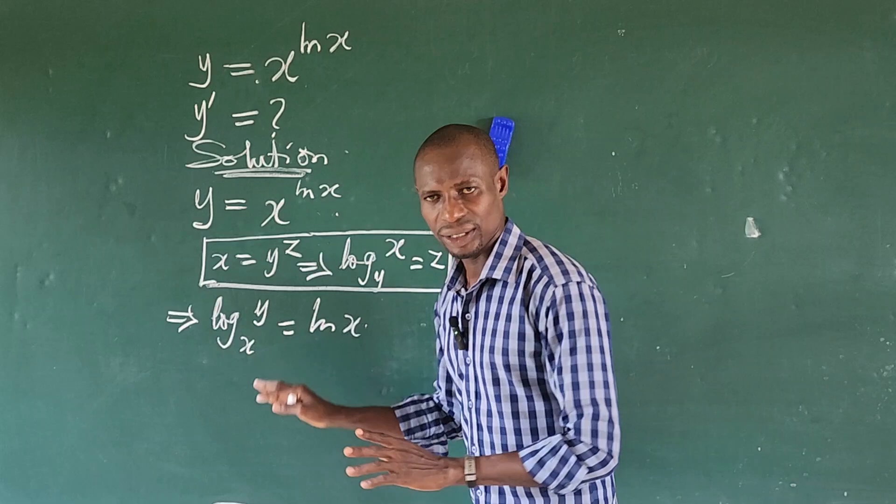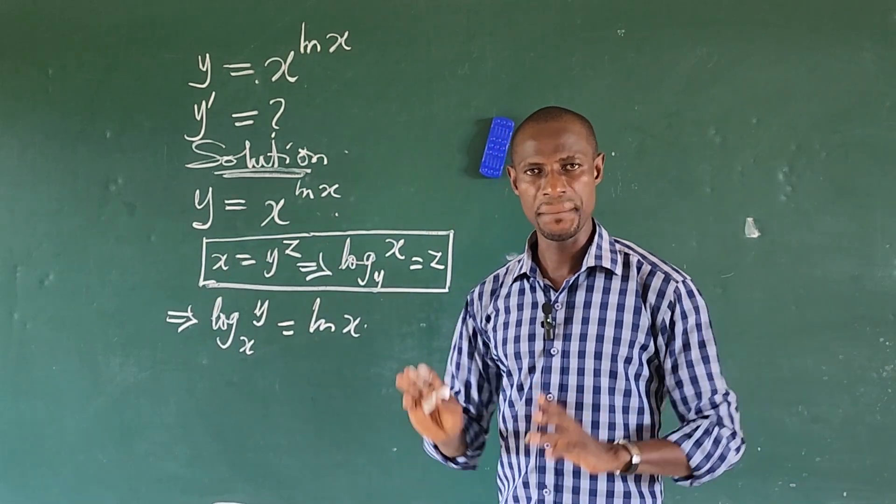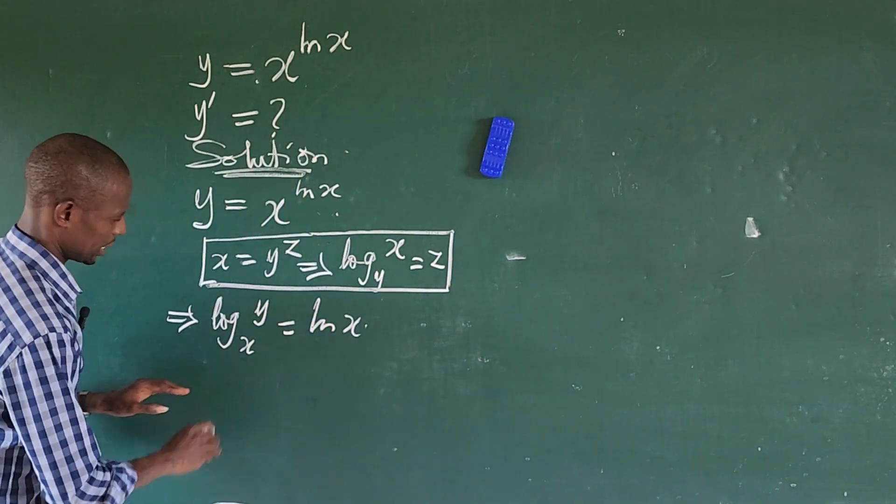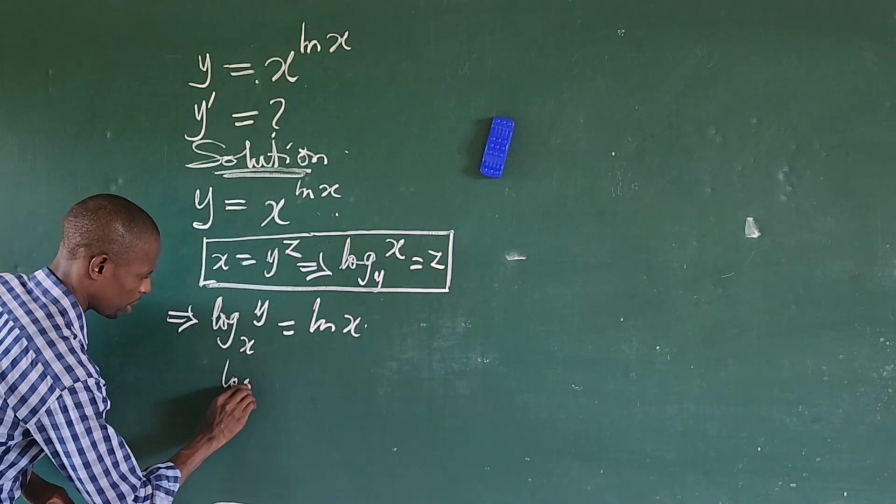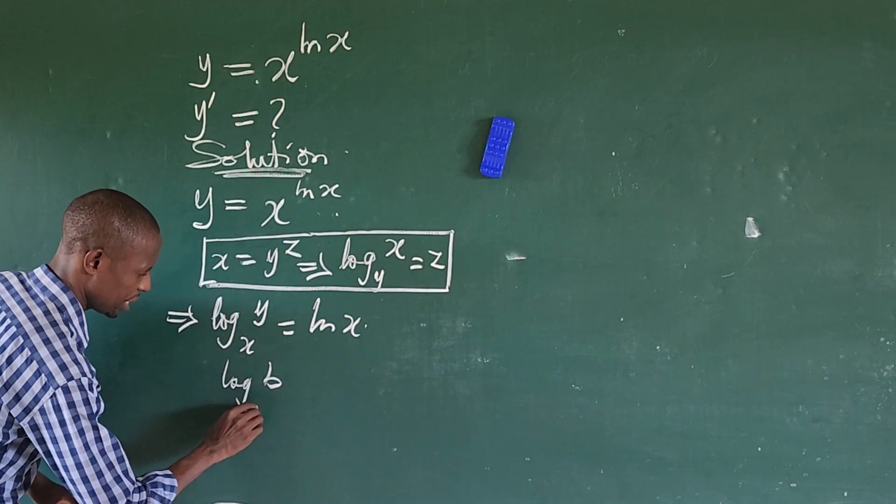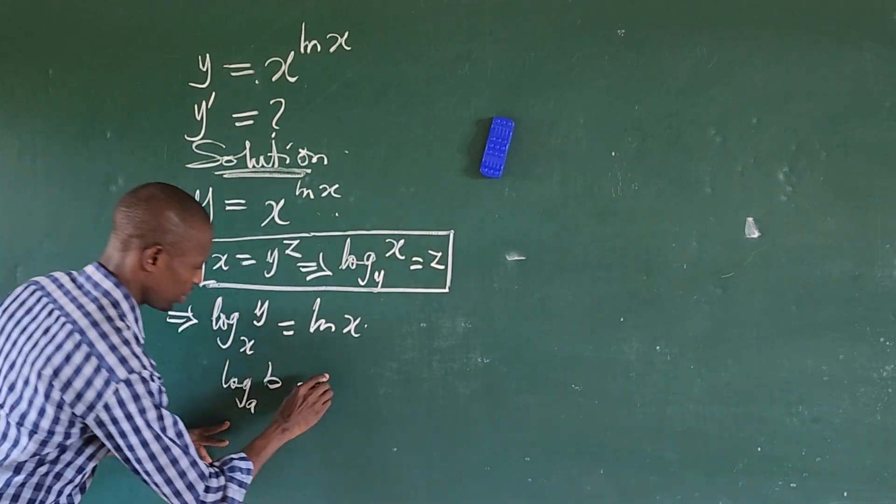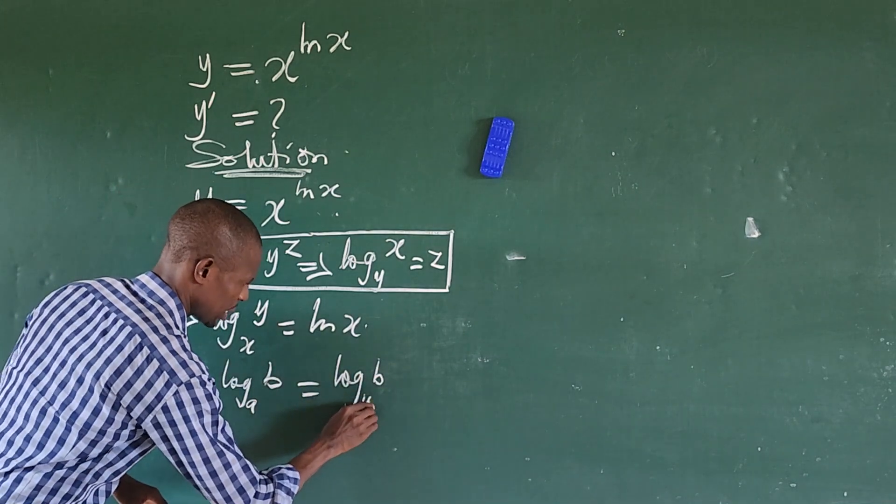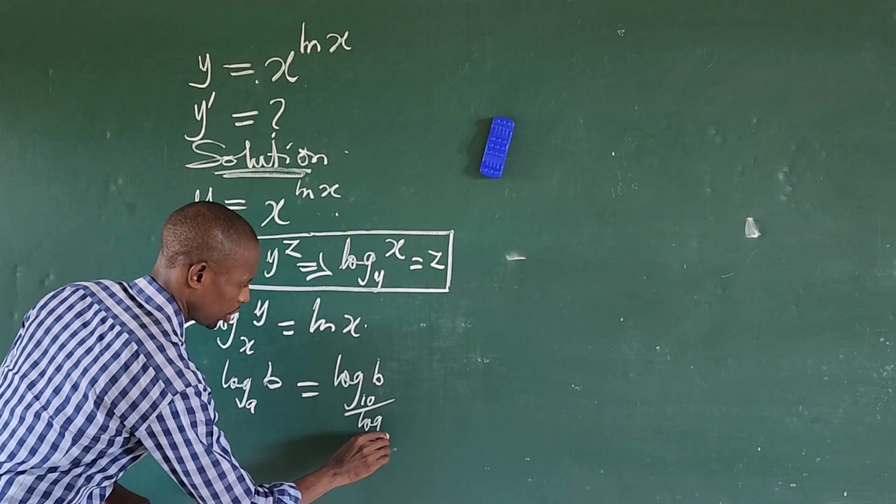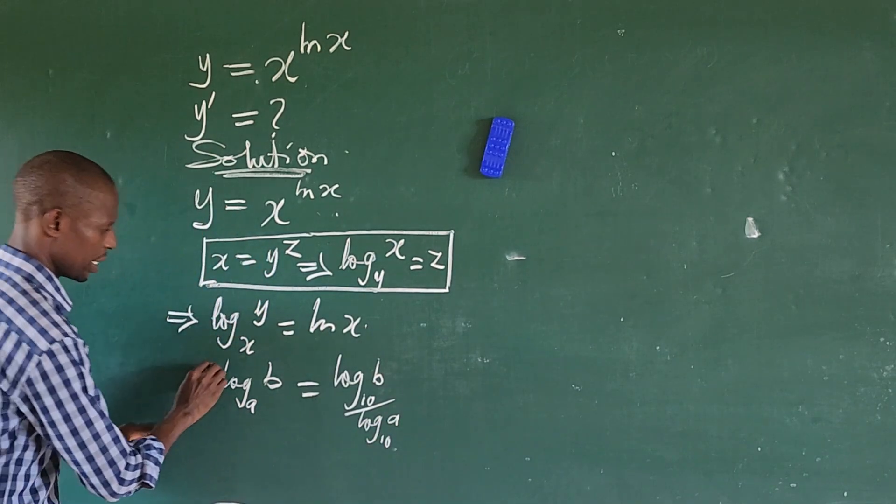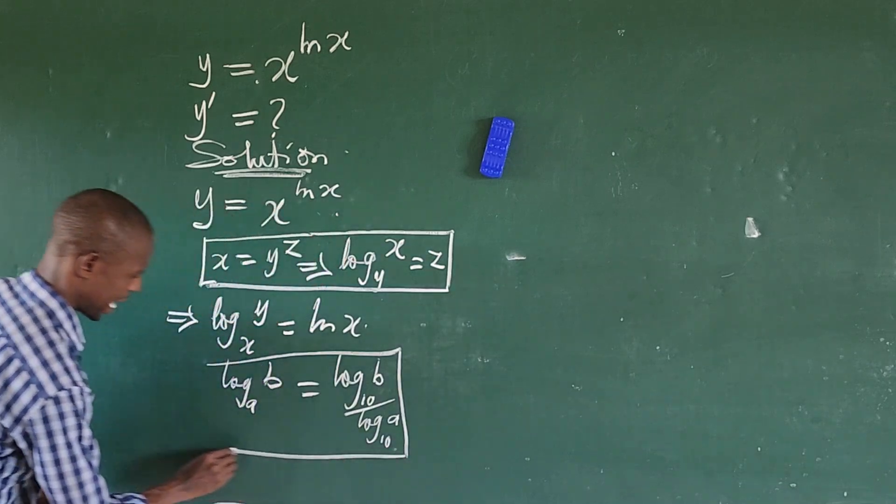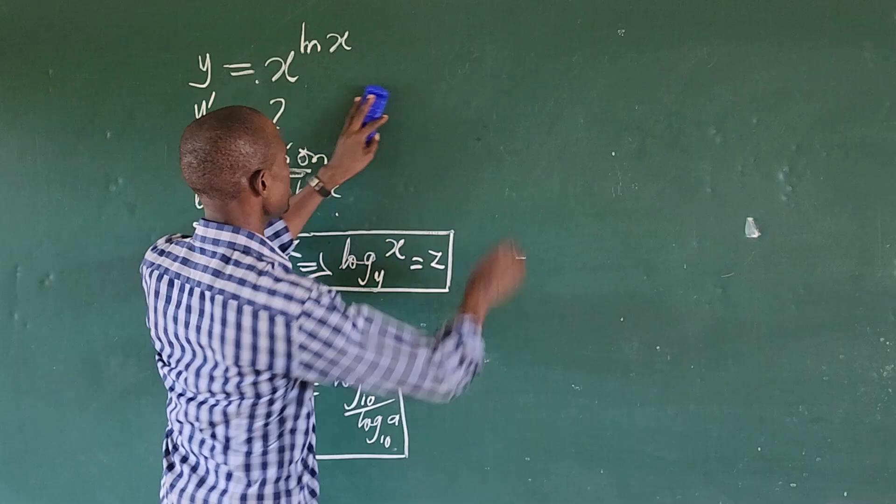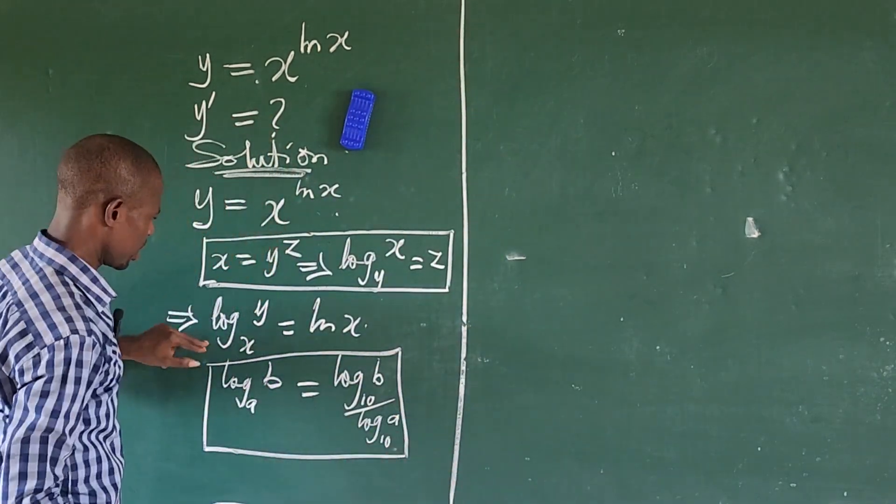Now we have another law that is called the change of base law. I want to rewrite this. What does that law say? The law says that if you have log b base a, we can change this to give us log b base 10 over log a base 10. So this is another law again we are going to apply in solving this.